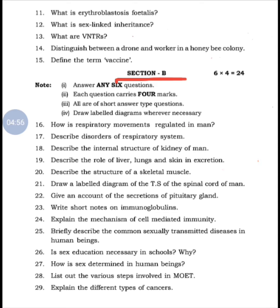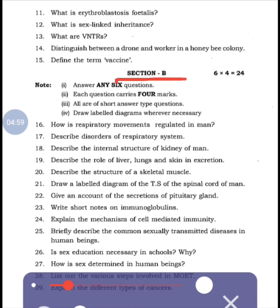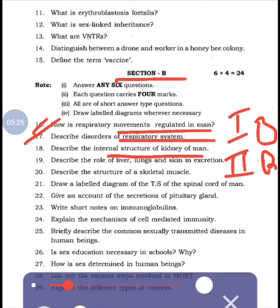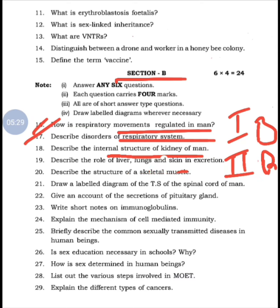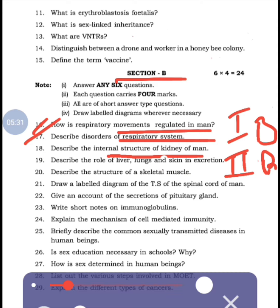Let's go ahead with the questions analysis. Sixteenth question: How are respiratory movements regulated in man? - from 1B breathing chapter. Seventeenth: Describe disorders of respiratory system - also from 1B. Both questions from 1B. Eighteenth: Describe the internal structure of kidney in man - from 2B. Nineteenth: Describe the structure of skeletal muscle - from 3A muscle chapter.